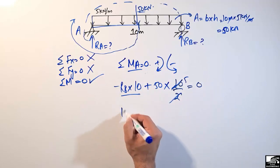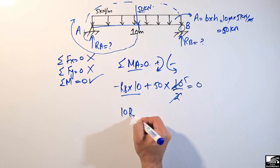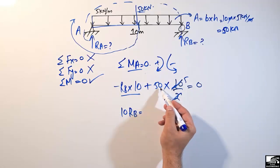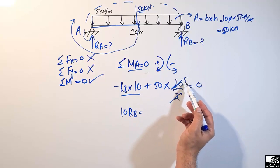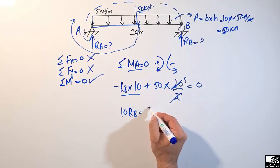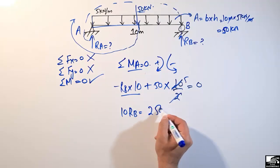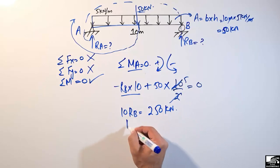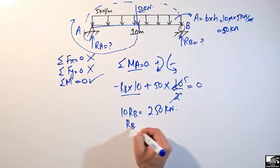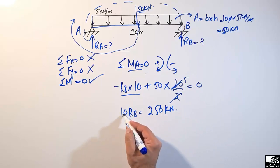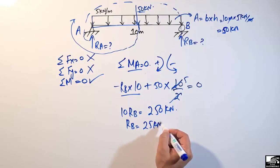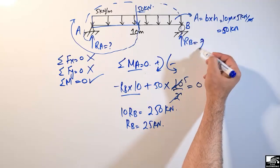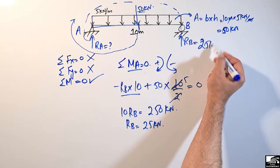Simplifying: 10 × RB equals 50 × 5, which gives 10 × RB equals 250 kilonewton·meter. Dividing both sides by 10, RB equals 25 kilonewton.